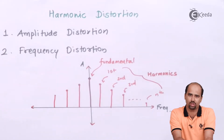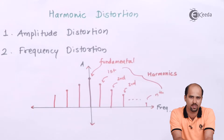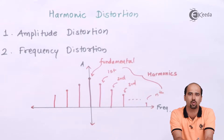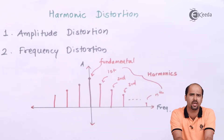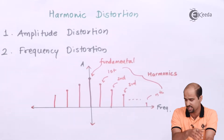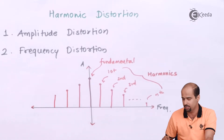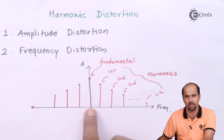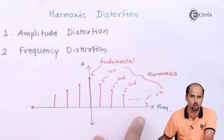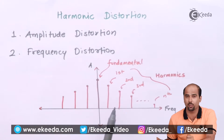Harmonic distortion is of two types: amplitude distortion and frequency distortion. In amplitude distortion, there is no same amplitude for both cycles — for example, the first half cycle gives 10 volts while the negative half cycle gives only 9 volts. As shown in this diagram, I am talking about first, second, and third fundamental frequencies — that is the frequency distortion.